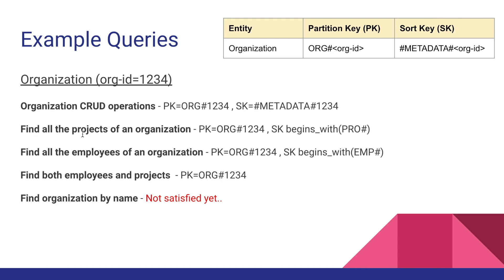To find all projects of an organization, we expect multiple items, so we use a query operation. We set the partition key to ORG#1234 and use a begins_with operator on the sort key to return all items beginning with PRO#, giving us all projects belonging to that organization. Similarly, to find employees of an organization, we use the same partition key ORG#1234 but with begins_with EMP# on the sort key to return only employee records.